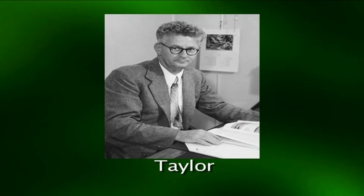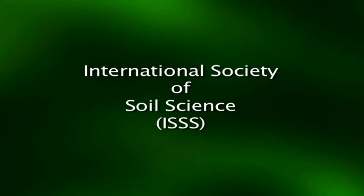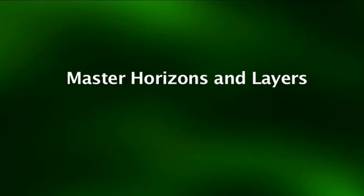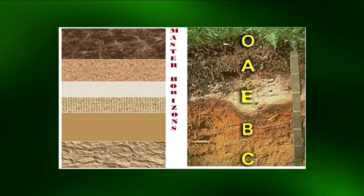The consolidated bedrock beneath was designated as the R horizon. Both these subdivisions were symbolized and ranked as master horizons. Taylor and Paulin in New Zealand adopted O, A, B, C horizons as master horizons and added the G horizon. The International Society of Soil Sciences (ISSS) accepted these designations with reservations for G and R horizons. One major innovation which ISSS included was the E horizon. The U.S. Soil Survey Staff in 1981 produced a soil survey manual in which the O, A, E, B, C, and R master horizons are used.